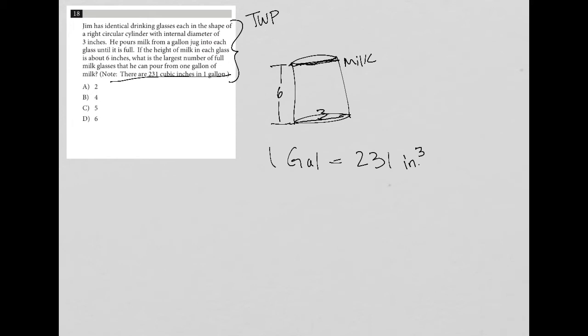This glass here, the volume—and again, this is in the test, the test provides this information to you. I don't know why I crossed it out. The volume for a cylinder is pi r squared h.